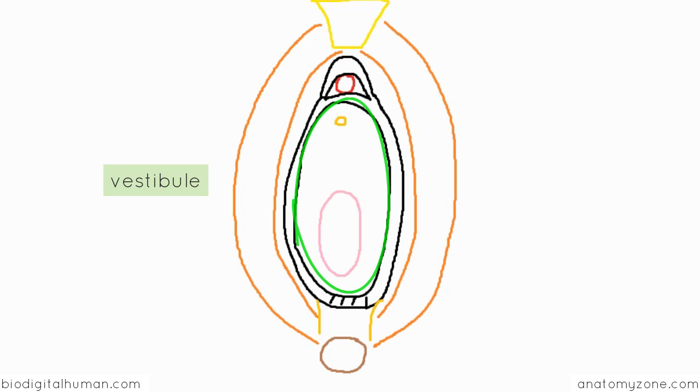So the vaginal orifice is surrounded by a thin membrane called the hymen. In young girls, this actually completely covers the orifice, but you get rupture of this fold of membrane, the hymen, with first sexual intercourse or through other mechanisms such as injury.